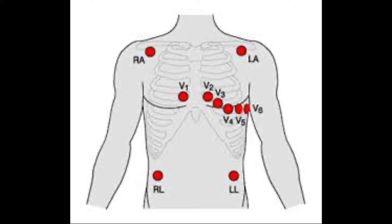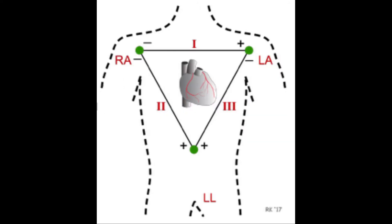Within those leads, we talk about multiple types. We have bipolar leads, which just have one positive and one negative. Examples are the limb leads — leads 1, 2, and 3. We're looking from arm to arm, arm to leg, different views, which will be demonstrated in a couple of images here.